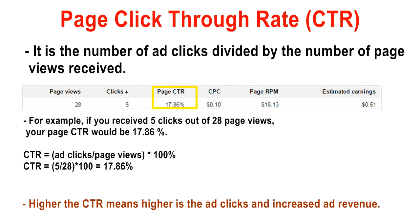So let's start with page CTR — it means page click-through rate. It is the number of ad clicks divided by the number of page views received. Let me take a simple example as displayed below, where it shows page views is 28 and clicks is 5.